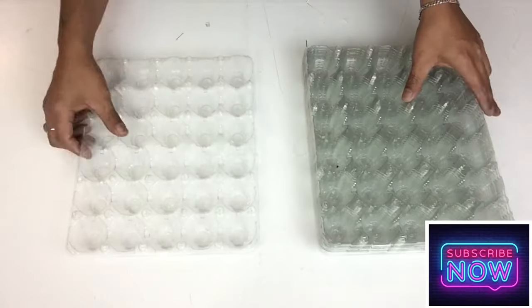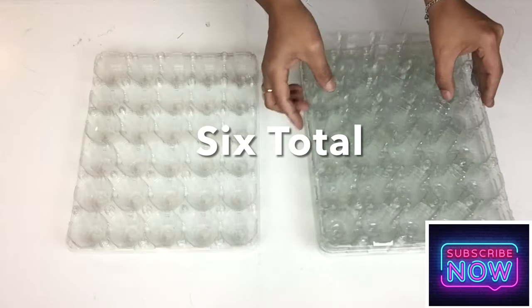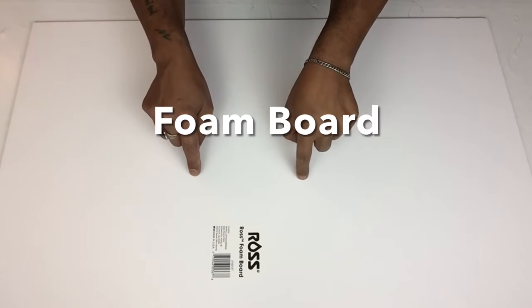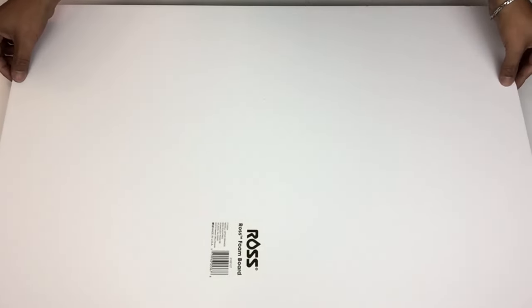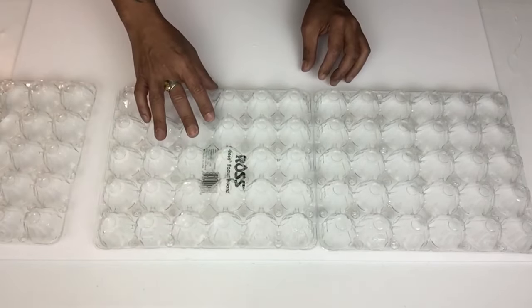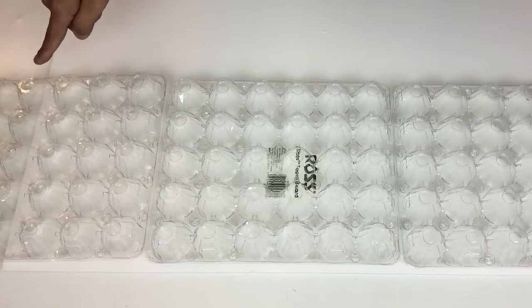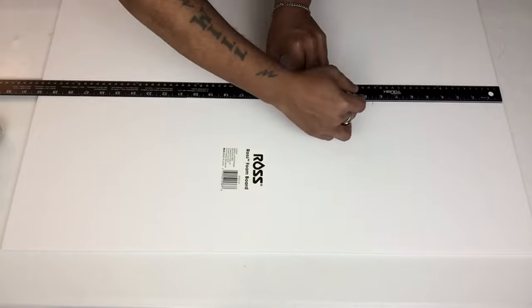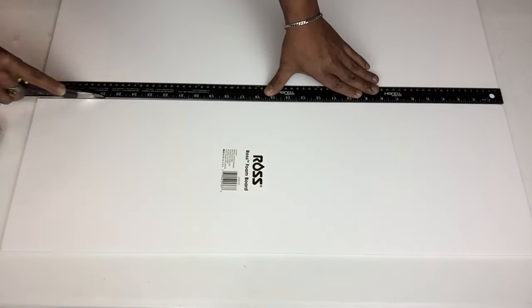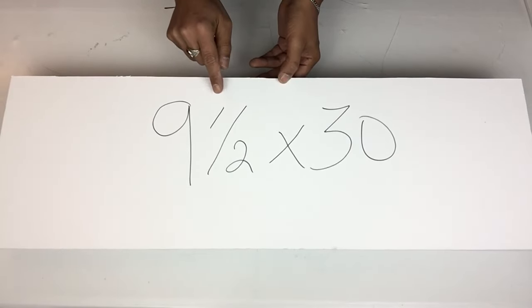Next I'll be using foam board and I'll start with three egg holders and I'll place them on the edge of the foam board flat face down. The last egg holder I'll be cutting it to fit the foam board. Next I'll take my long ruler and I'll draw a straight line down, cutting it nine and a half by thirty. I cut two of the same size.